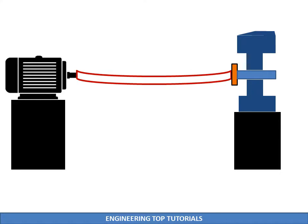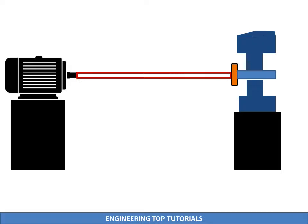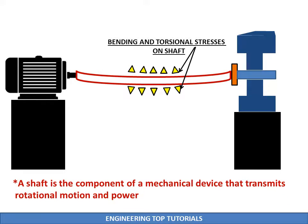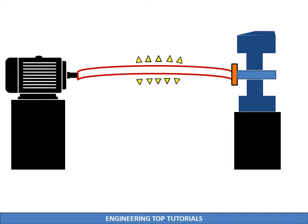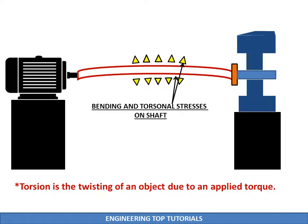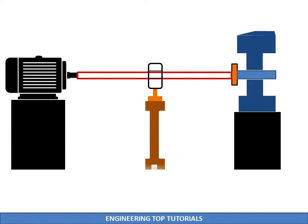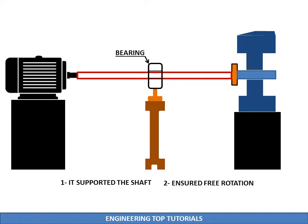Most mechanical devices make use of one or the other type of bearings for the spinning parts. Considering a shaft transmitting power supported at both ends, if the distance between both ends is large then the shaft will experience torsional and bending stress. If a bearing is used for such a shaft, then it will support and hold the shaft in the correct position. The bearing will ensure free rotation with minimum friction, and also it will take up the forces that act on the shaft and transmit them to the frame or the foundation.